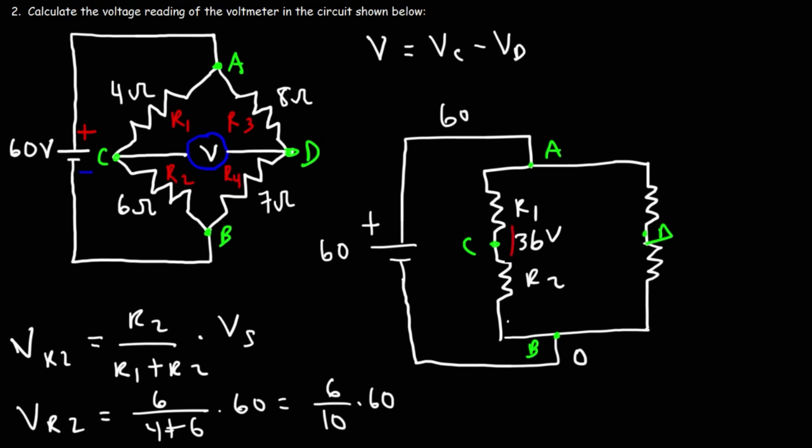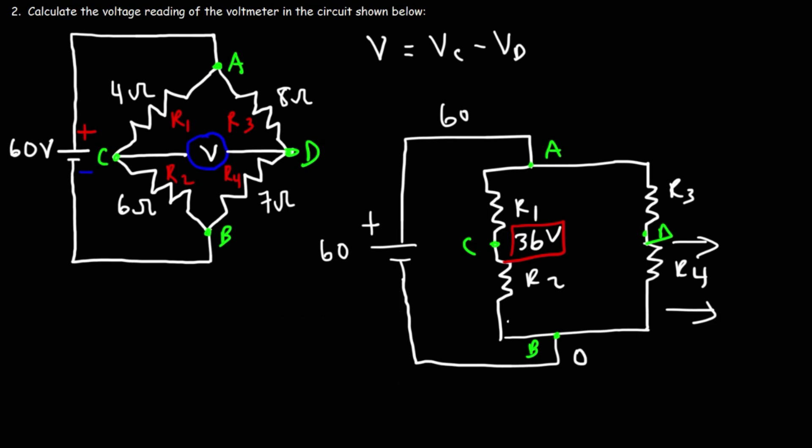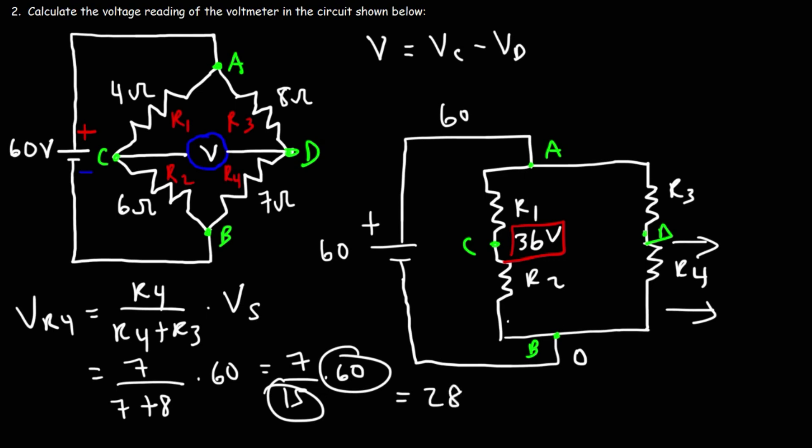Now, let's do the same thing to determine the potential at point D. So this is R3 and this is R4. So the formula that we're going to use is going to be very similar. The voltage across R4 is going to be R4 divided by R4 plus R3 times the source voltage. R4 in this example is 7, and then R3 is 8 times 60. So we have 7 over 15 times 60. 60 divided by 15 is 4. 4 times 7 is 28. So the potential at D is 28 volts.